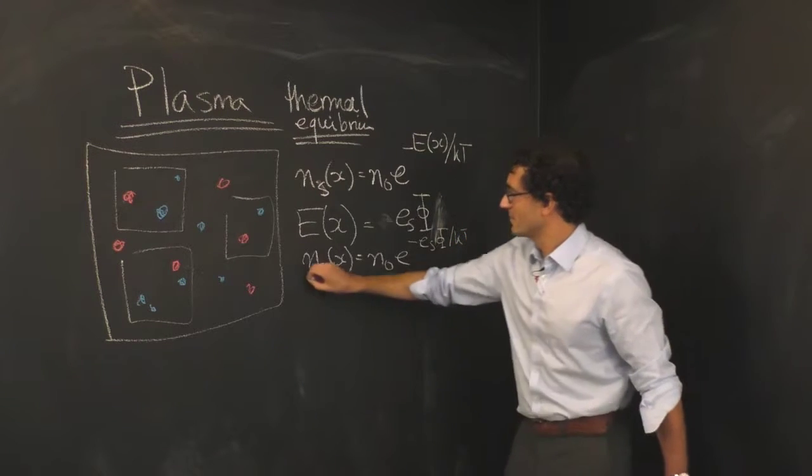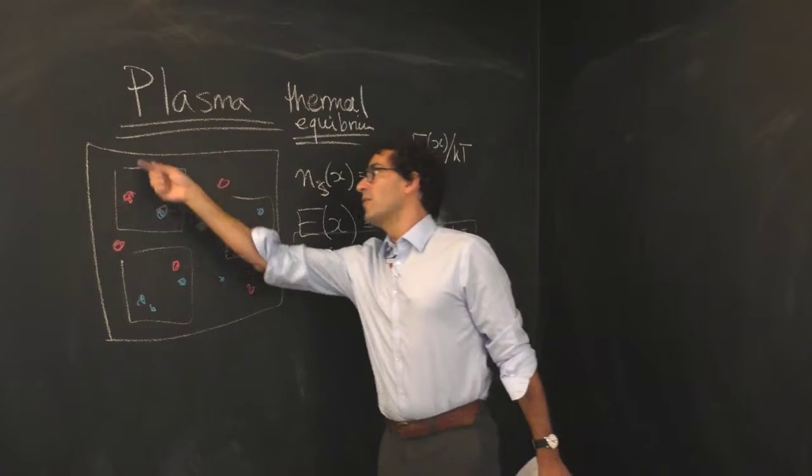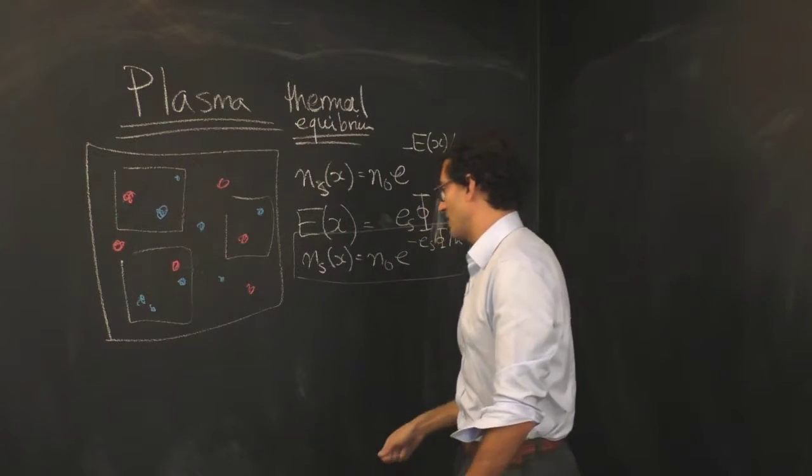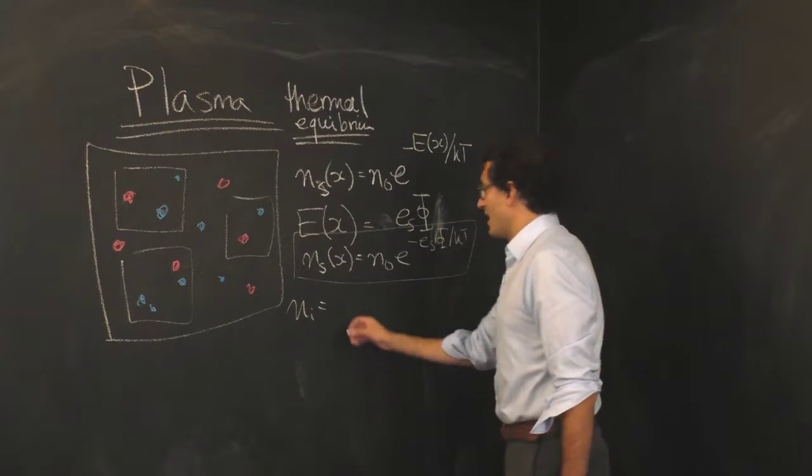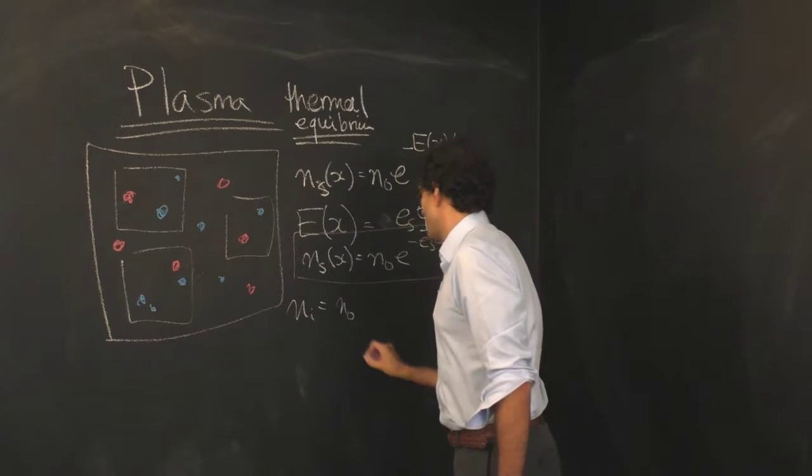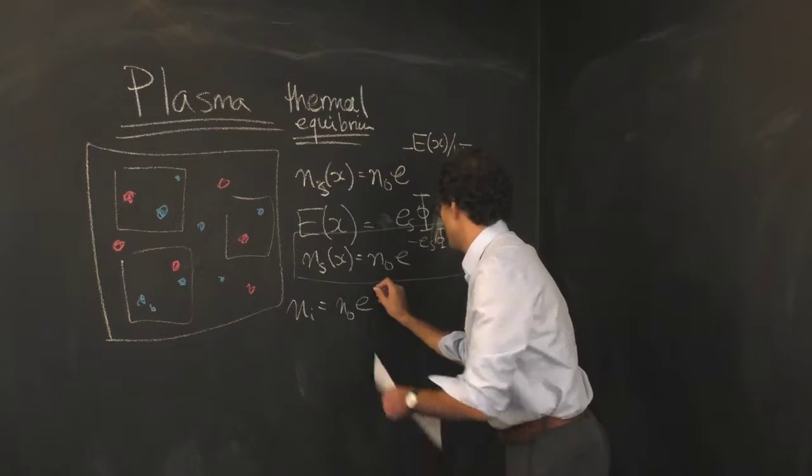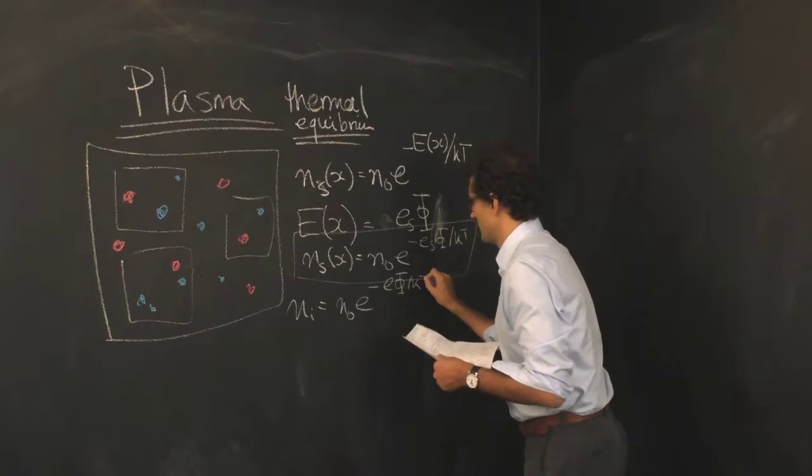Okay, so if we assume the gas is overall neutral, we assume that there's an equal number of positively and negatively charged particles. That means we can say that the density of the ions at any point in time is the overall density of the system times e to the negative eφ/kT.